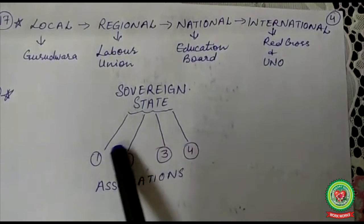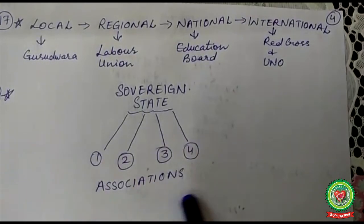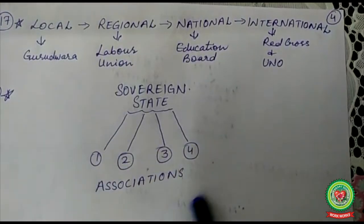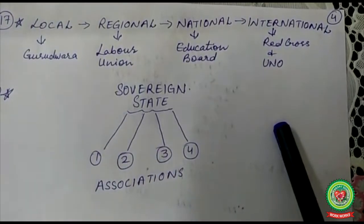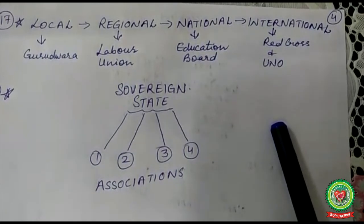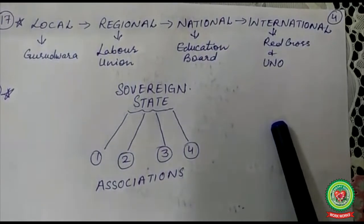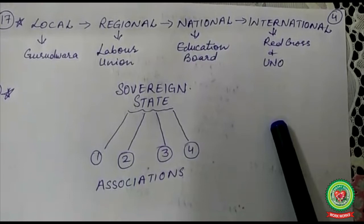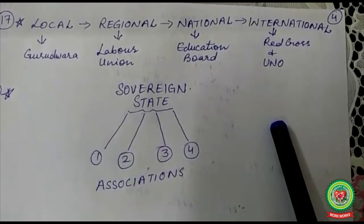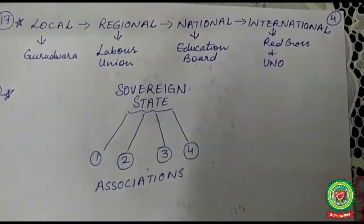The last point is sovereignty: the state is sovereign and all associations work under the sovereignty of the state. Any number of associations all work under the sovereignty of the state. I hope you have understood today's topic. You will again watch this video and do the concerned homework. Revise the topic — till then, goodbye and thank you.